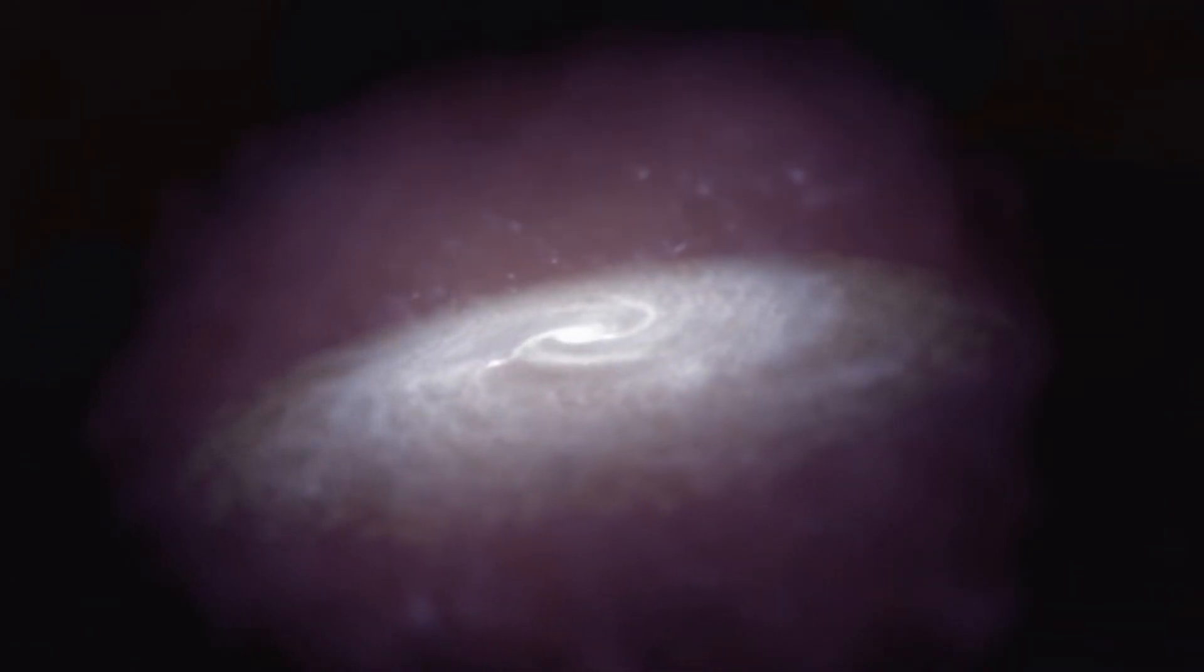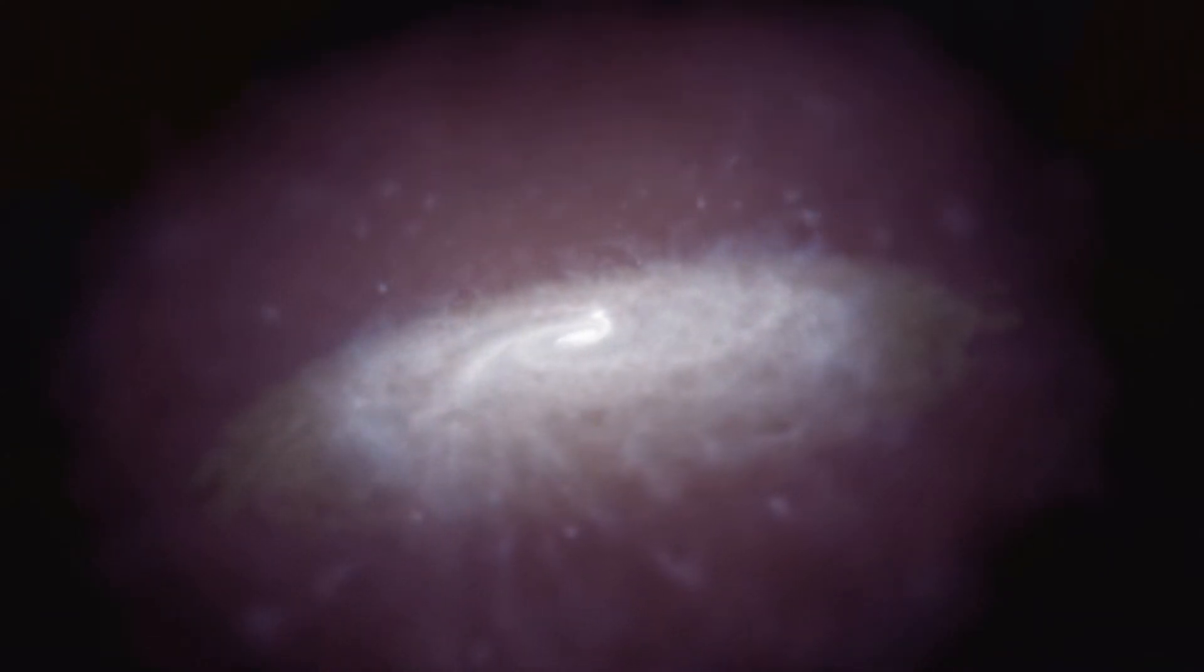Cosmologists have calculated that galaxies are spinning too fast to stay together if Einstein's and Newton's laws are applied to all the stars and gas we can actually see in them. Some physicists have argued that perhaps the laws of physics themselves need to be changed. Intriguing as these possibilities, there really is no justification whatsoever for such a radical assumption.